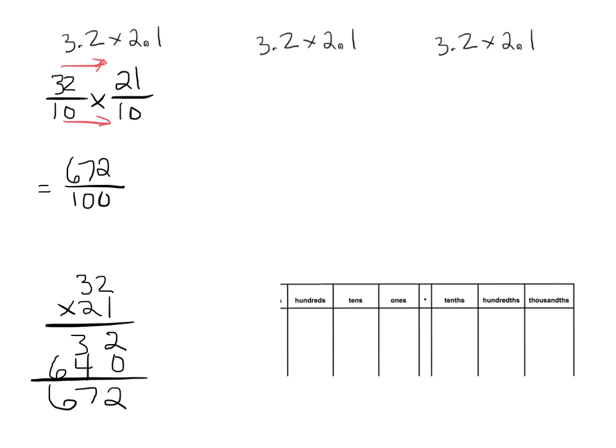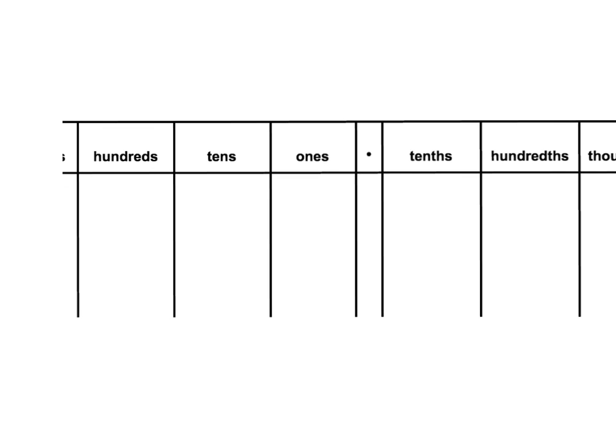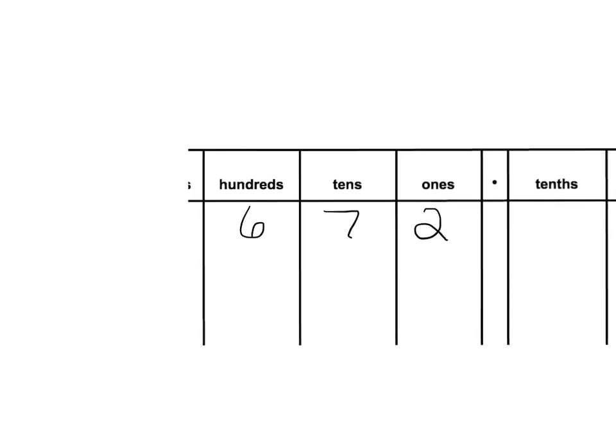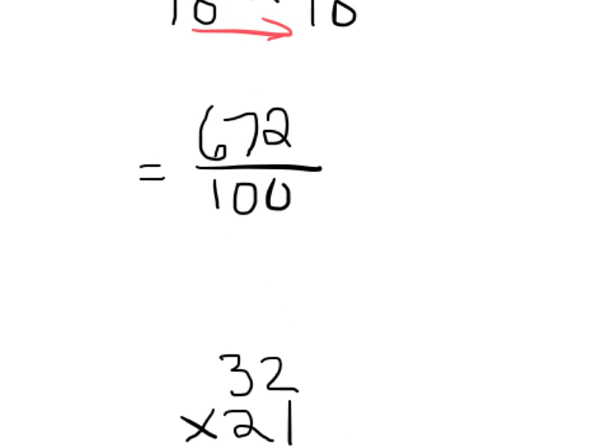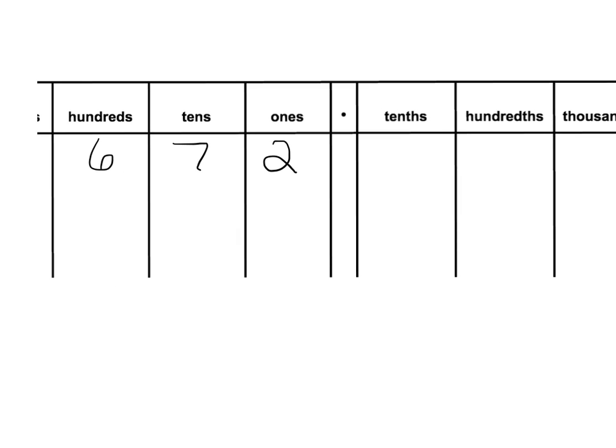Now 672 hundredths. Now at this point, the idea would be, well, you could go over here and look at this place value chart, and you can say, well, 672 would be here, but divide by 100. Now why are we dividing by 100? We're dividing by 100 because it says so right here, divide by 100. So 672 hundredths. So we're going to go back over here, and when we divide by 100, that means each digit gets moved over two places.